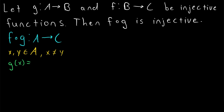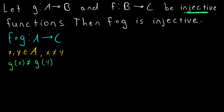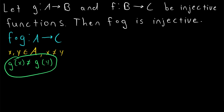Well, since X is not equal to Y, G of X cannot be equal to G of Y, because G is already assumed to be an injective function. So if we input these two distinct elements, their images under G will also be distinct. G of X is not equal to G of Y, because G is injective.